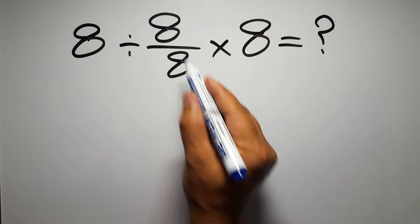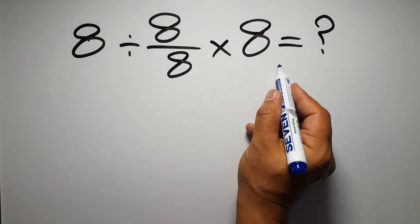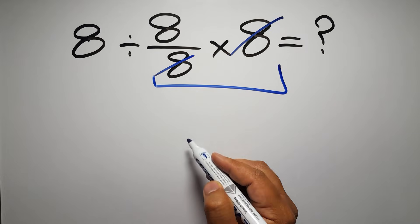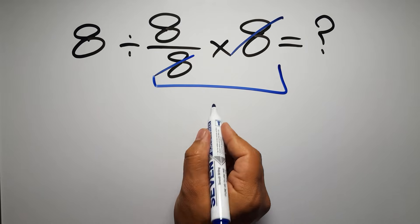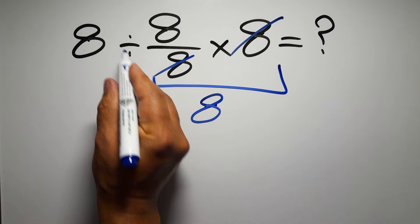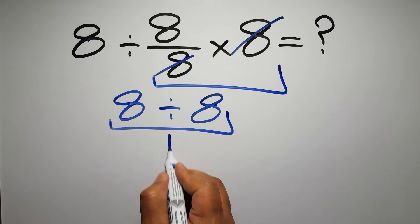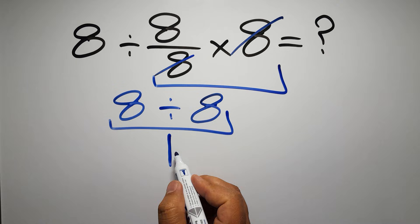First we do this multiplication 8 over 8 times 8. We can easily cancel this 8 and this 8, so here we have just 8, and 8 divided by 8 gives us 1. But this answer is not correct.